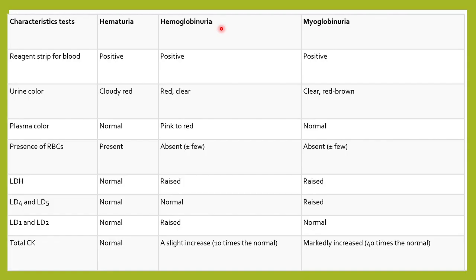These are a few ways how we can differentiate hemoglobinuria and myoglobinuria. A urine dipstick test positive does not just mean the patient is having hematuria — it can also be positive in hemoglobinuria and myoglobinuria. So sometimes it becomes necessary for us to differentiate hemoglobinuria, hematuria, as well as myoglobinuria.